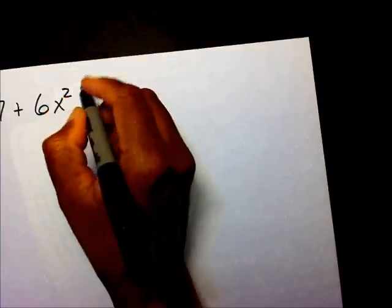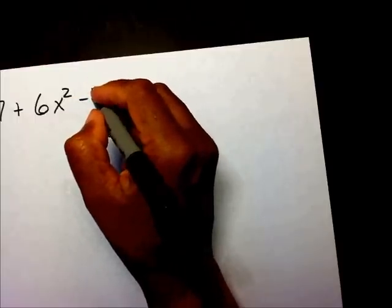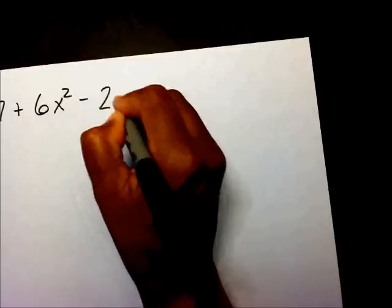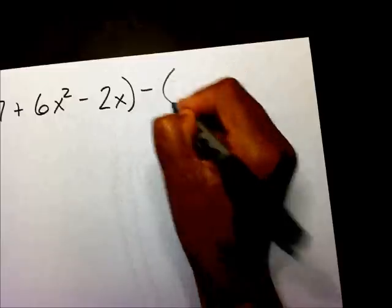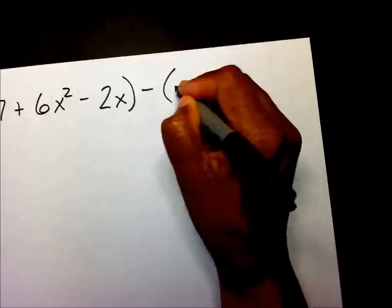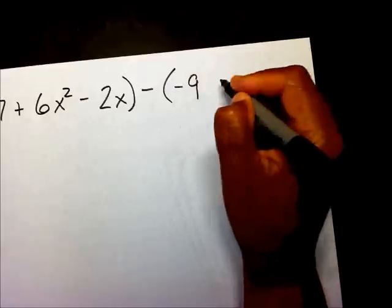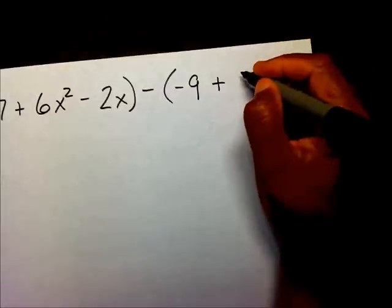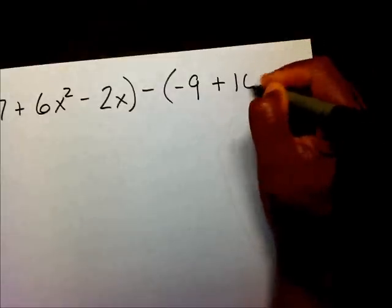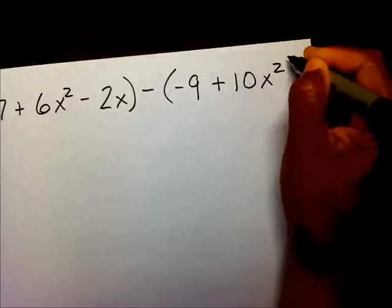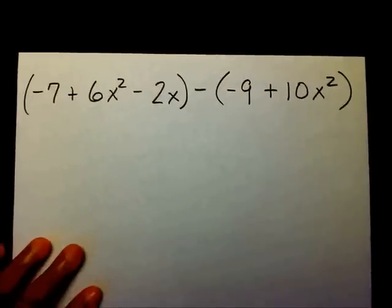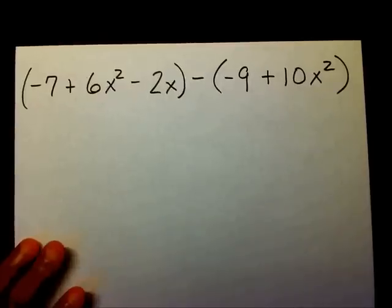Let me give you one to work and let's see how you do. Negative 7 plus 6x squared minus 2x, minus negative 9 plus 10x squared. Please put the video on pause and subtract these two polynomials.